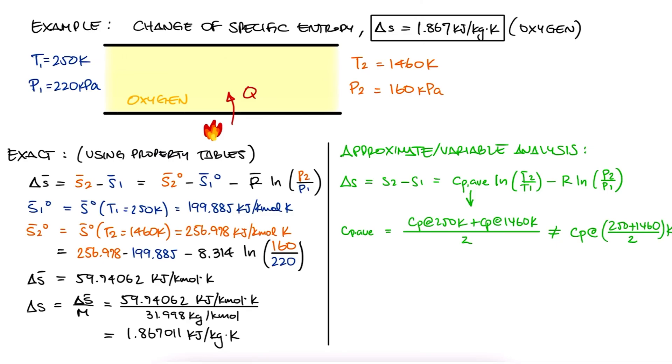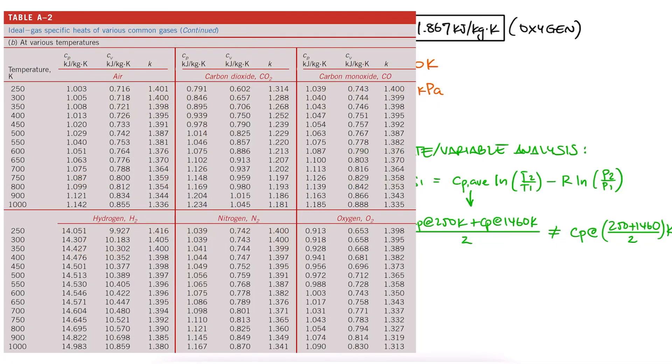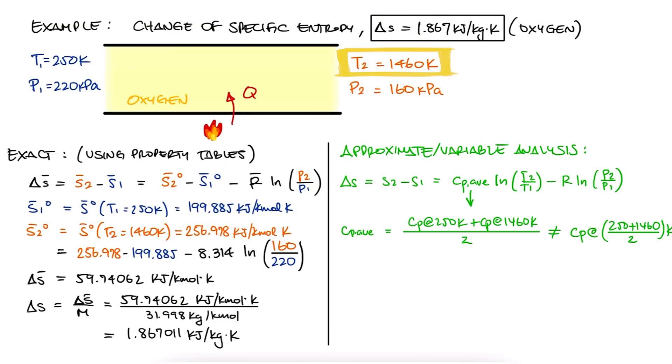The problem here is that the tables we have for Cp for oxygen only go up to 1000 kelvin. So, since we don't have a value for 1460, we do need to approximate even more by saying that the average Cp for Cp at 250 and Cp at 1460 is just Cp at the average temperature of 855 kelvin.